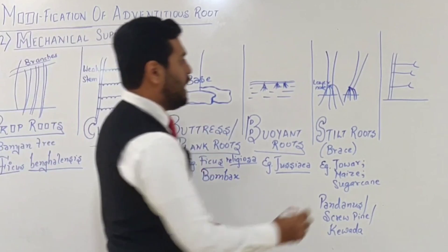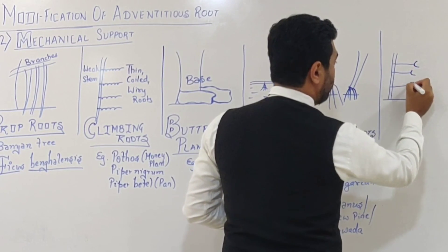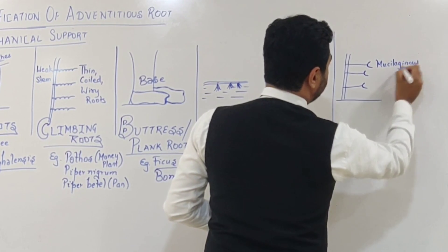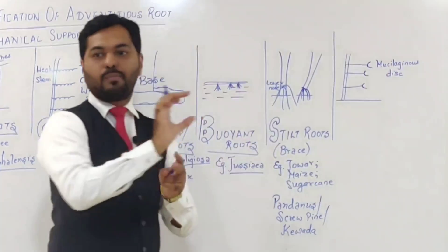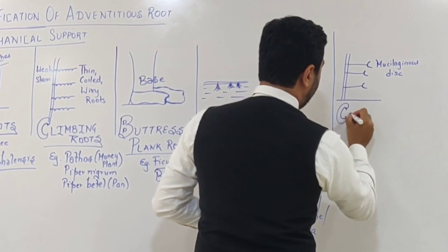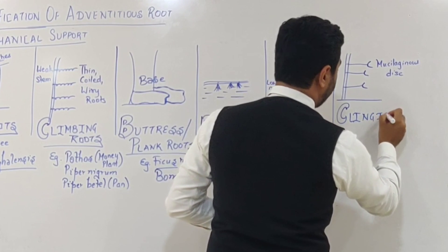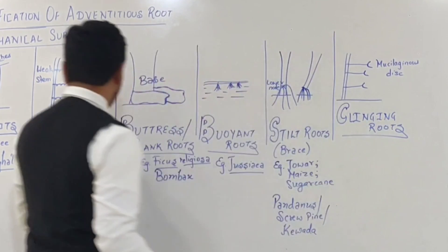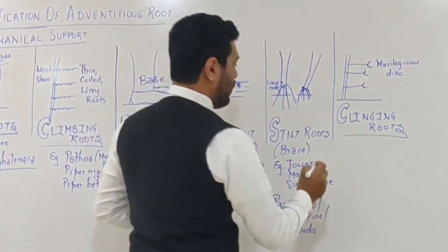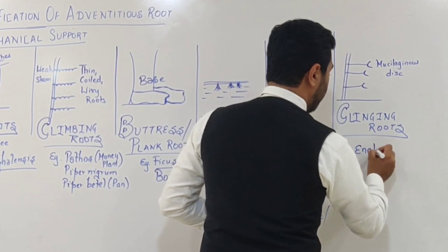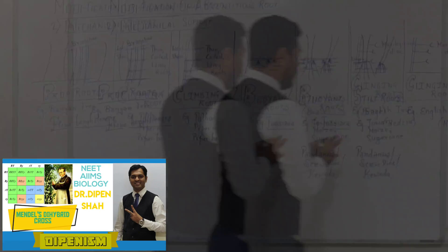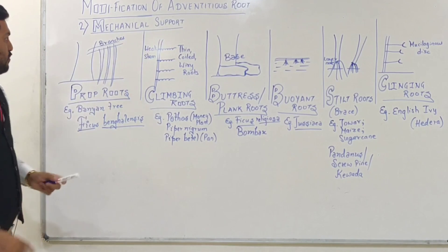The next type involves a weak stem similar to climbing roots, but here the roots have a disc-like structure at their end. These roots have a mucilaginous (sticky) disc that helps the roots stick to walls and surfaces. Such roots are called clinging roots — 'clinging' means to stick. These clinging roots are exemplified by the English ivy plant, whose scientific name is Hedera.